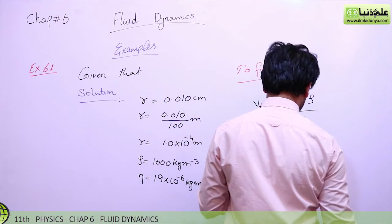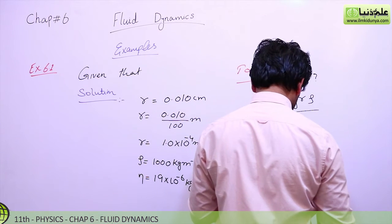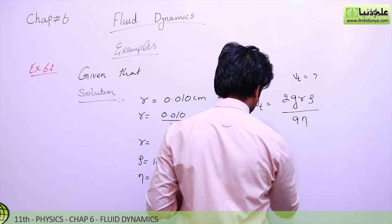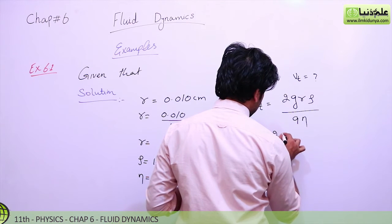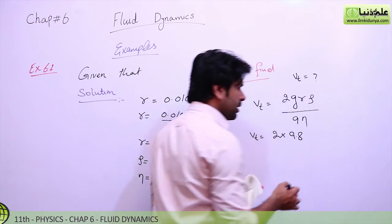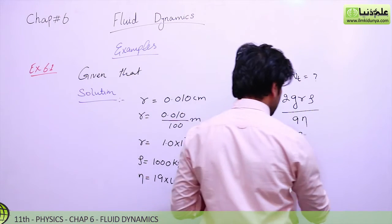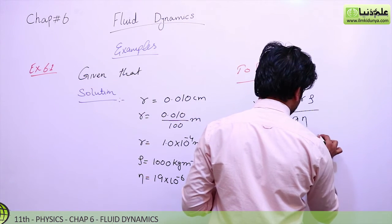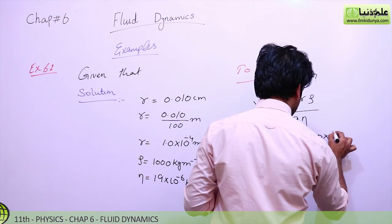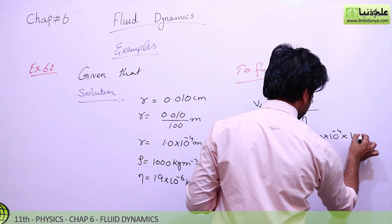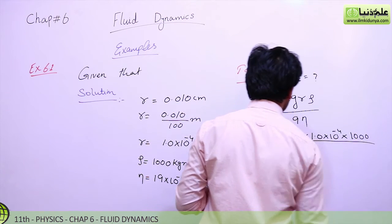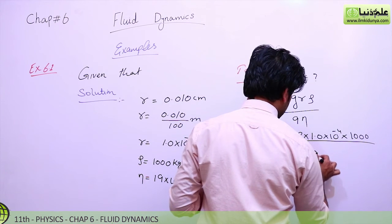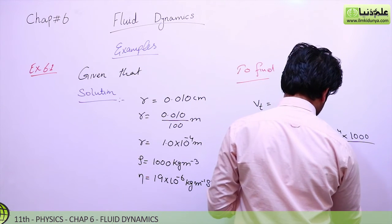Now we have to find out the values. This is the formula of terminal velocity, now we will substitute the values. Given that 2 g we know that gravitational acceleration having value 9.8 meter per second square and r is 1.010 raised to power minus 4 and the rho is density of water 1000, 9 as it is and the value of eta is 19 10 raised to power minus 6.